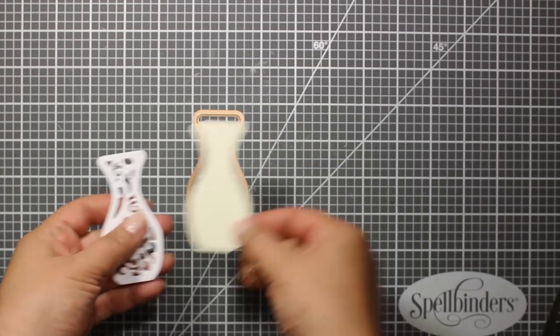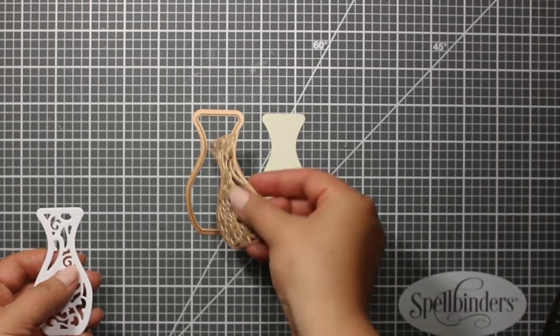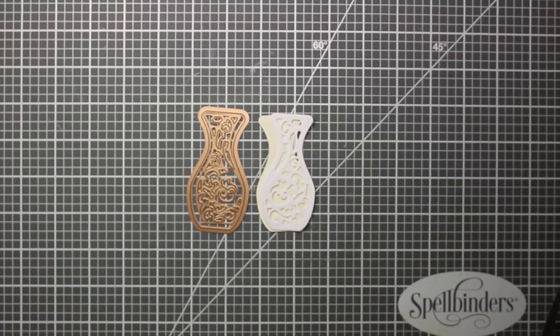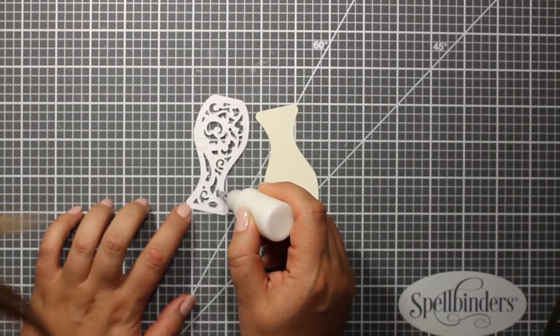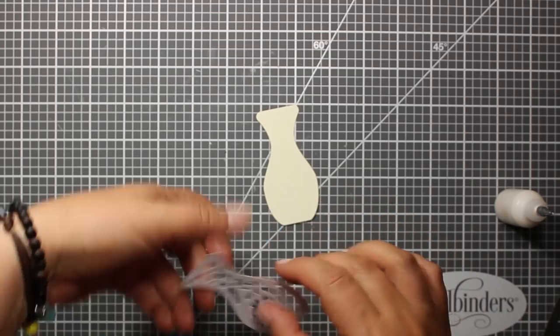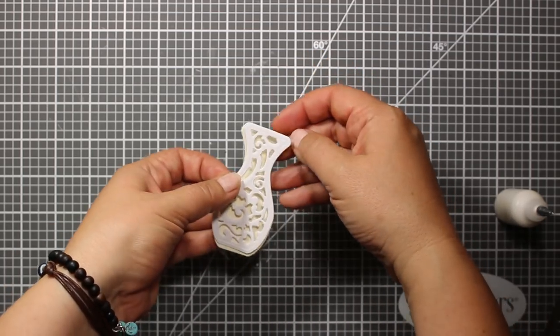The next image I'm using is filigree vase. I've die cut the background out of ivory cardstock. And I've die cut the filigree one out of white cardstock. And then I'm going to use some liquid glue to attach the lacy one on top of the plain one.